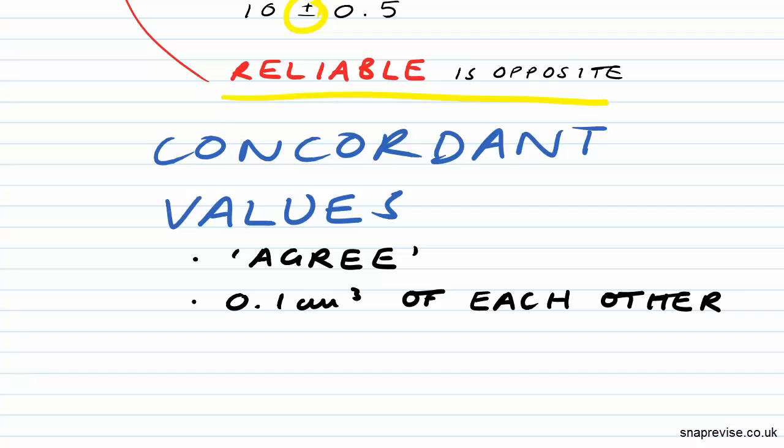Concordant values are something you may have met in your titrations. They're values which agree with each other. They lie within about 0.1 cm cubed of each other. So if you take a series of titrations and the measurements you receive are within 0.1 cm cubed of each other, we can say that they're concordant. They support each other.